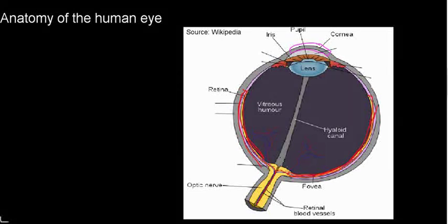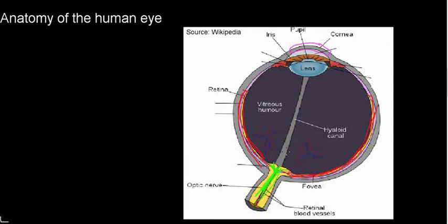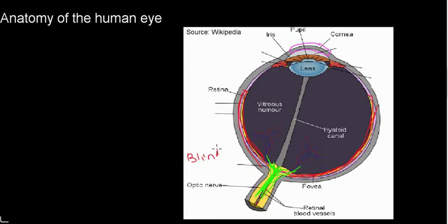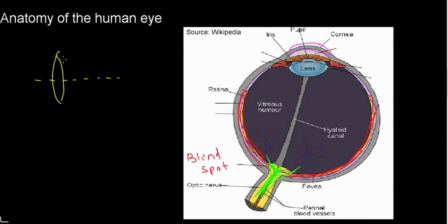We can see right away that this particular spot does not have photosensitive tissue with photoreceptors, because the optic nerve passes through there. We have to have a nerve in the eye, and it enters at this point. Because it spills into the eye here, there are no photoreceptors at that location — and that is why we have the blind spot. Just like any lens has an optical axis where light converges to a single point, our eye has that too.